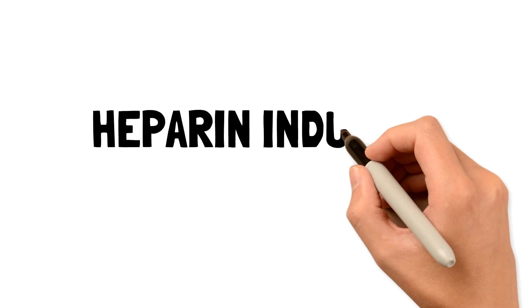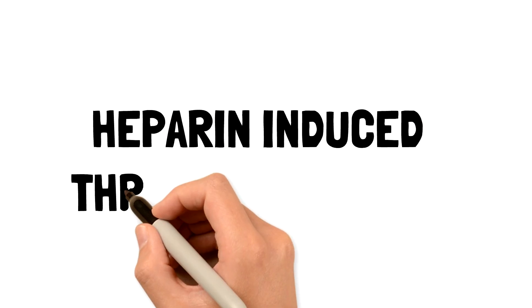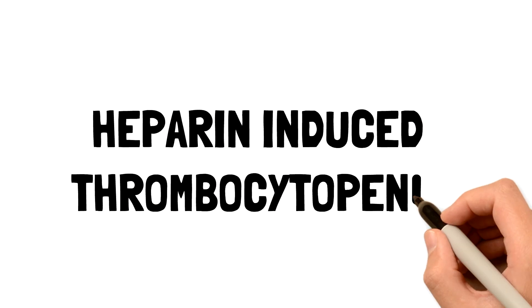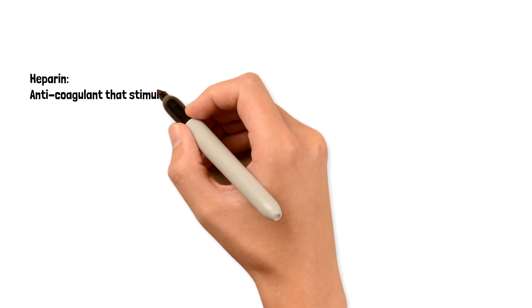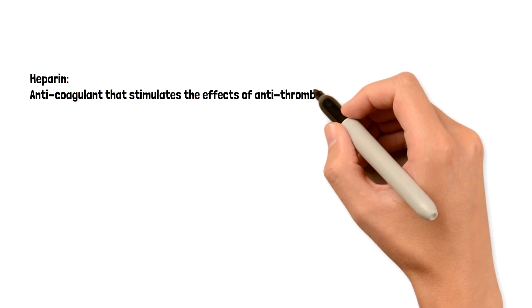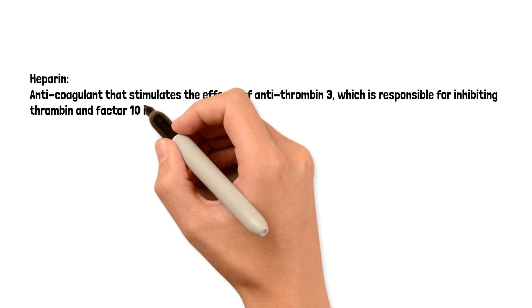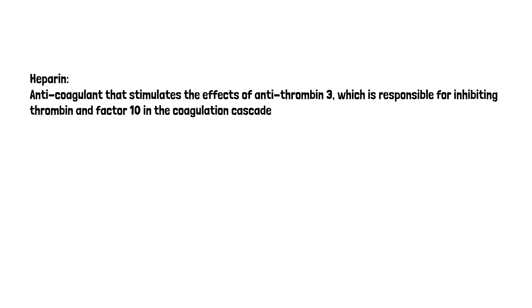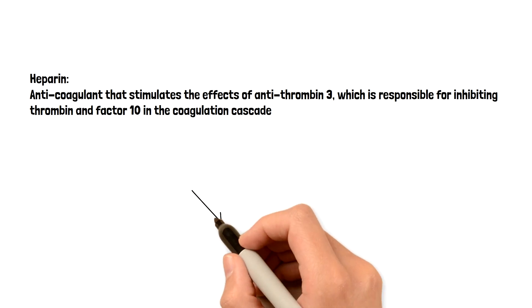In today's video we'll be talking about heparin-induced thrombocytopenia. Before we get started, let's discuss what heparin actually does first. It's an anticoagulant and it stimulates antithrombin 3. Antithrombin 3 inhibits factor 2, called thrombin, and factor 10 in the coagulation cascade — so it essentially inhibits the coagulation cascade.